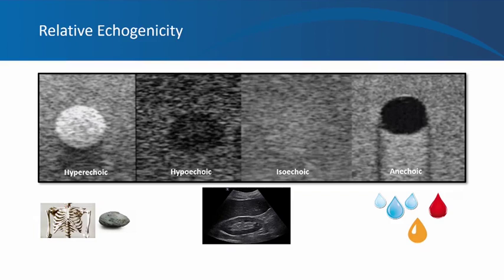When you have hydronephrosis, you see a black or anechoic area in the middle of the kidney. Simple cysts containing serous fluid will also appear black. Blood vessels containing blood appear black on ultrasound.